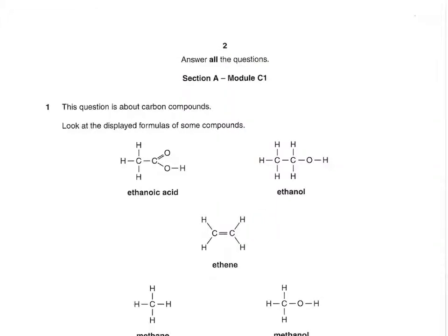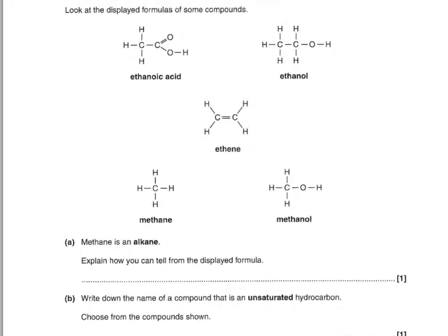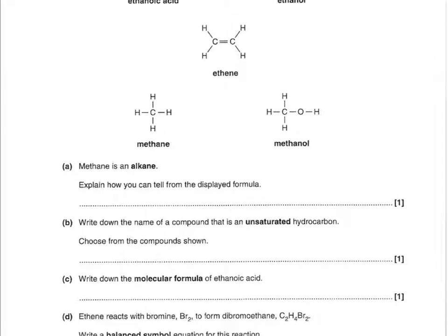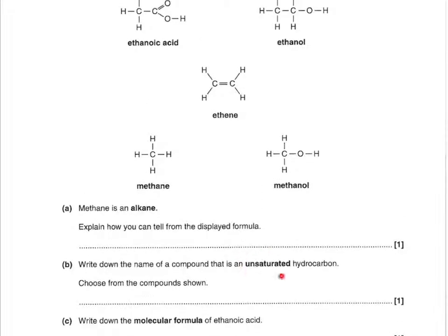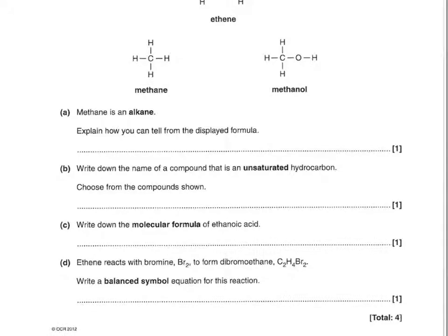The chemistry section: this question is about carbon compounds. There's ethanoic acid, ethanol, ethane, methane, and methanol. Methane is an alkane — explain how you can tell from the displayed formulae. Basically, it contains single bonds only, and that's what makes it an alkane. Write down the name of a compound that is an unsaturated hydrocarbon. Unsaturated means it has a double bond; hydrocarbon means it only has hydrogen and carbon. The choices with a double bond are ethanoic acid and ethene, but ethanoic acid contains oxygen, so the answer is ethene.